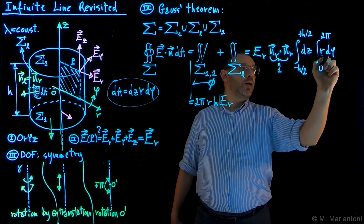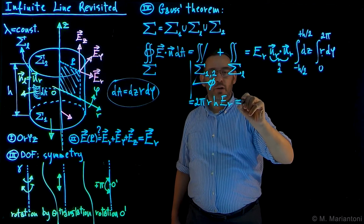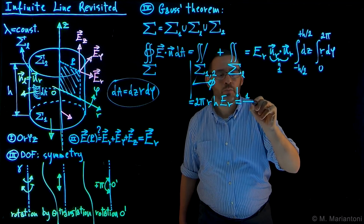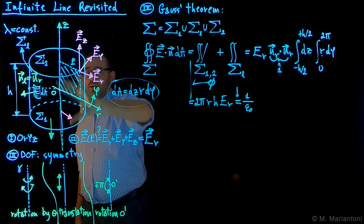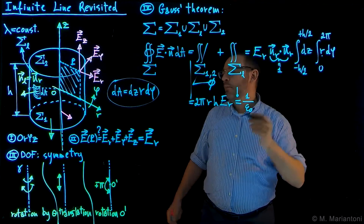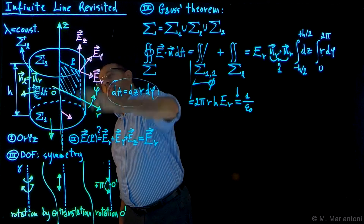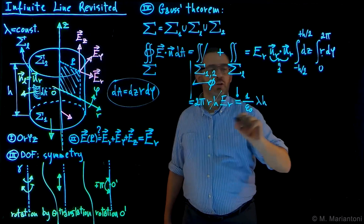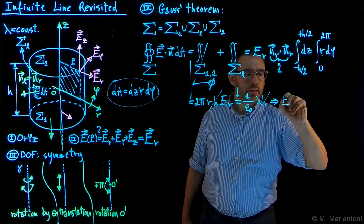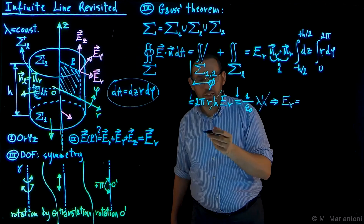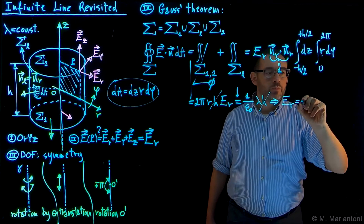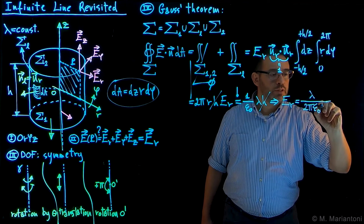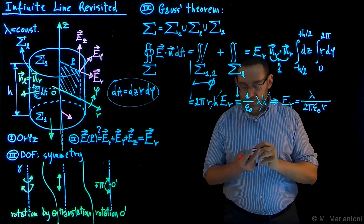Applying Gauss's theorem, this must equal (1/ε₀) times the total charge within the cylinder, which is lambda times H. The H cancels out. Therefore, ER equals lambda divided by 2π epsilon naught r — which is exactly the same result we found in the previous video using Coulomb's law and the superposition principle. If you want the vector form, we write it with the unit vector UR in the radial direction.